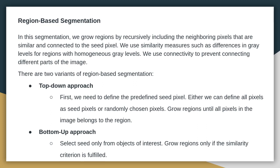We select seed pixels only from the object of interest and grow regions only if the similarity criteria is fulfilled. In the bottom-up approach, we select objects of interest as seeds and examine the similarity criteria, adding neighboring pixels to the region.